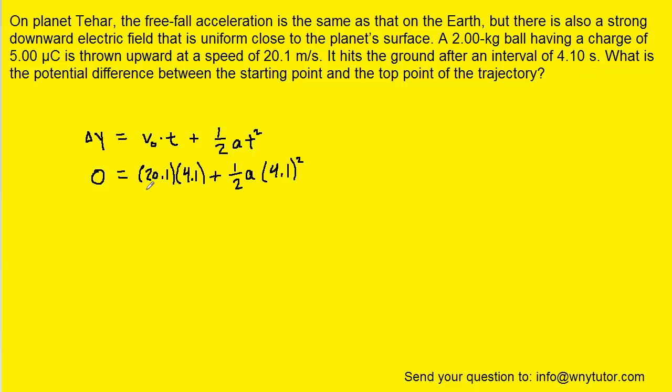Now of course to solve for acceleration we'd have to multiply these two terms first. And then on the other chunk of terms we have to square the 4.1 and take half of it. We'll subtract both sides by the 82.41. And then we'll divide both sides by the 8.405.